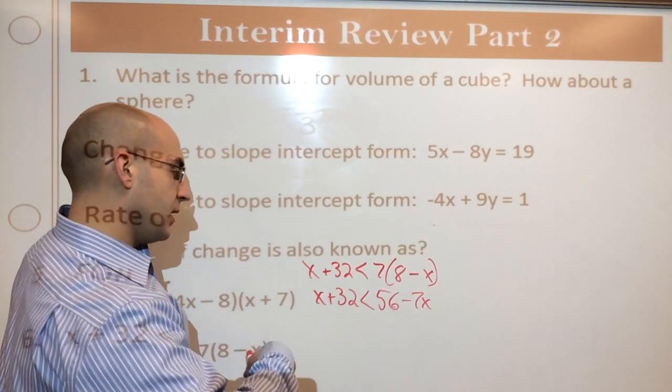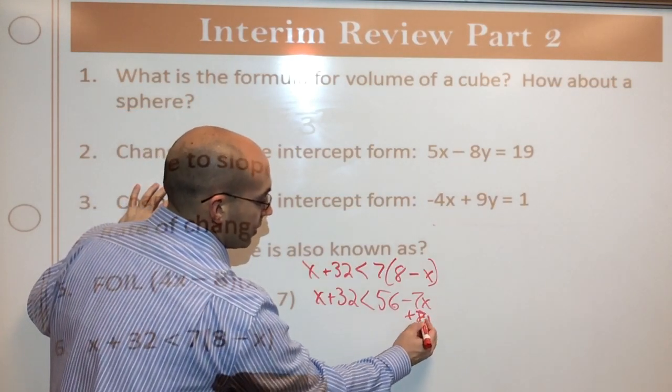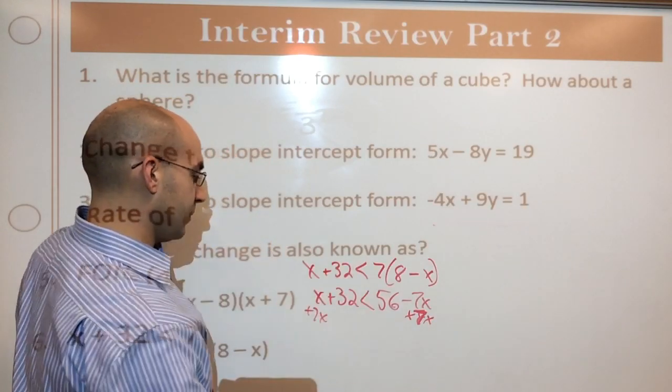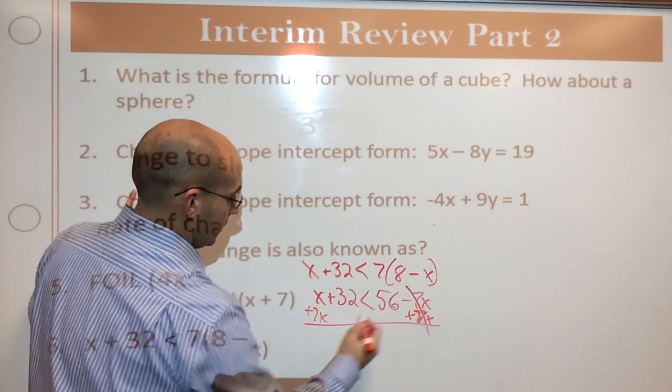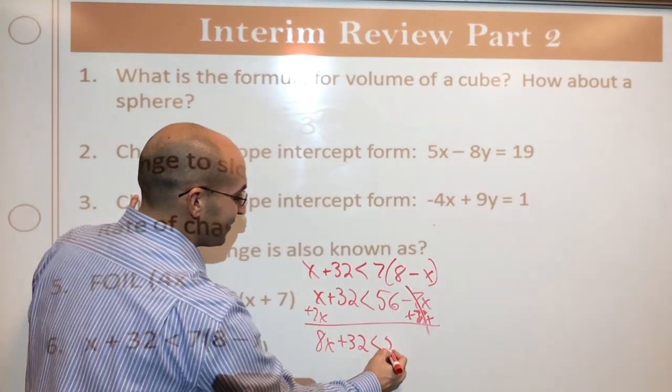56 minus 7x. Okay. Now I can start moving things from one side to the other. I'm going to add 8x on both sides. Oh. 7x. Sorry. Getting ahead of myself. I went and caught the ball and ran with it before I actually caught it.